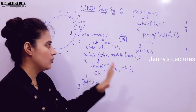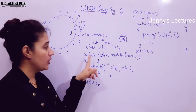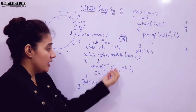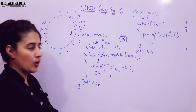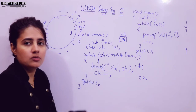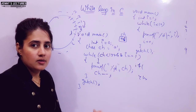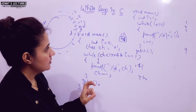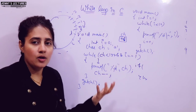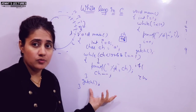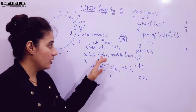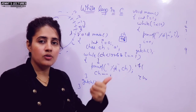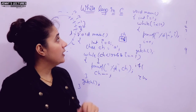You can also do nesting of while loops — one while loop inside another. Or you can use if-else statements within a while loop based on your requirements. I cannot tell you everything here; this is just an overview. Try different experiments with while loop and see what output you get. If you have any questions, ask in the comments or message me on Instagram. See you in the next video — take care, bye bye.